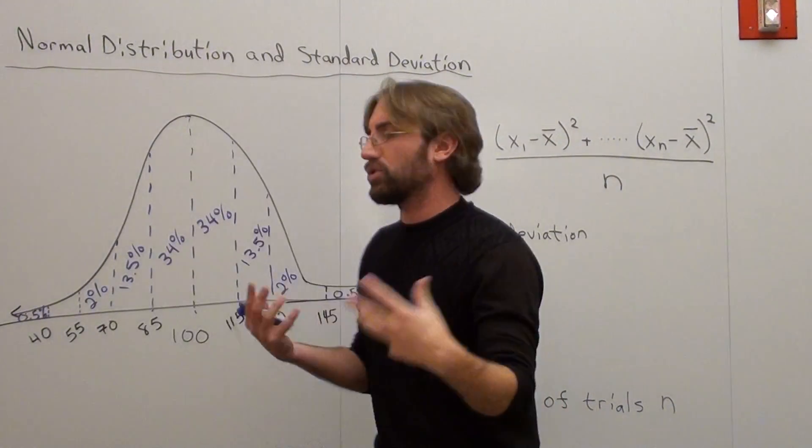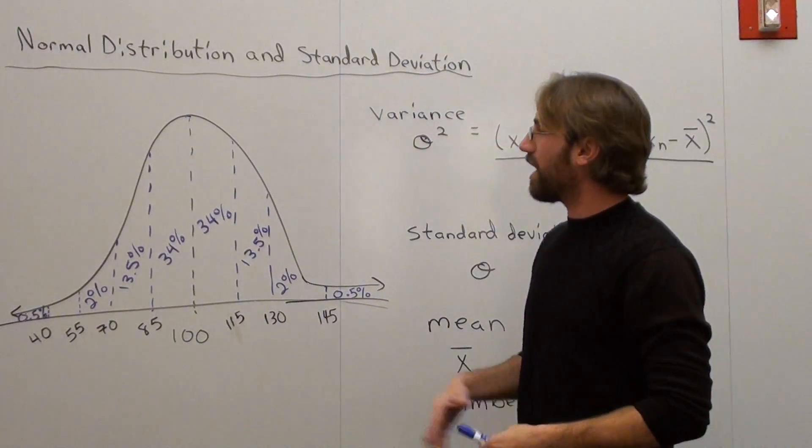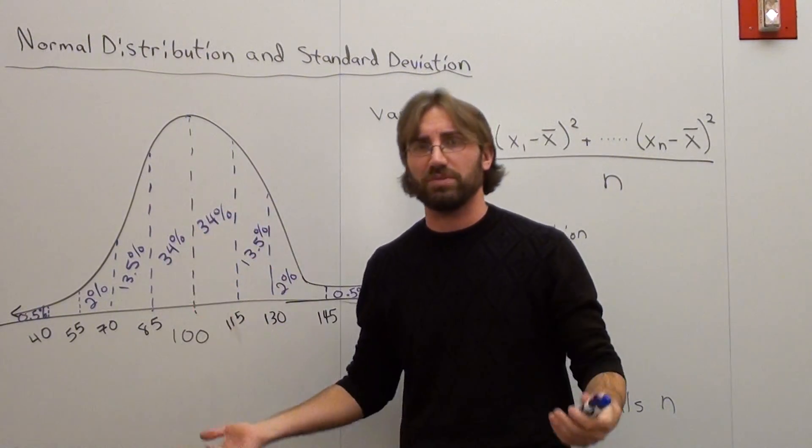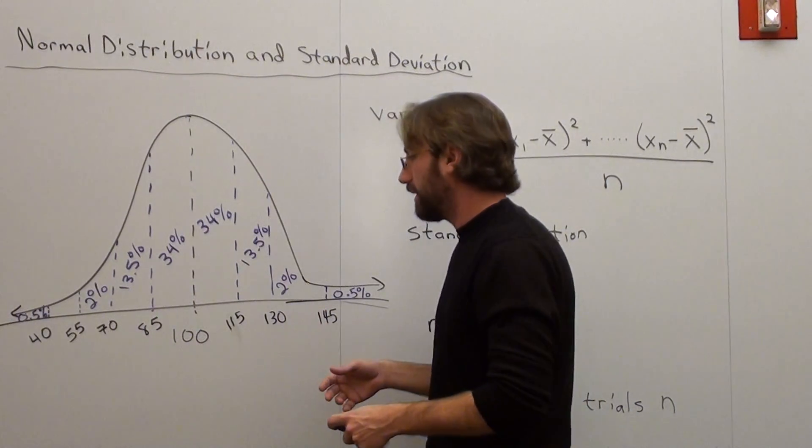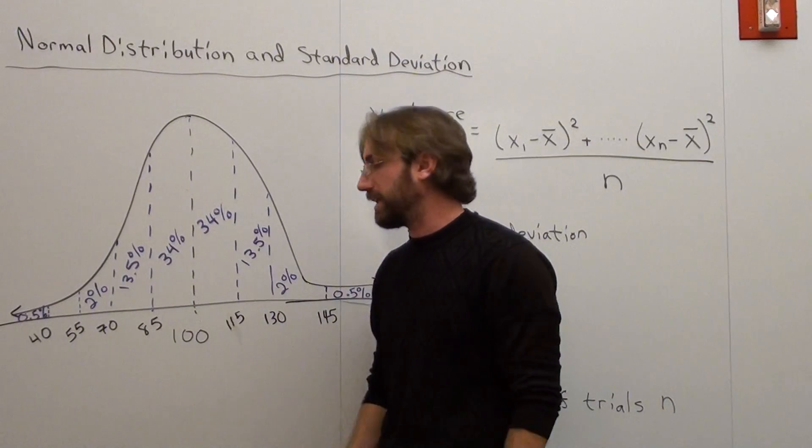People call this a bell curve. It's a normal distribution in this case. And it's actually a normal distribution of something that a lot of people for some bizarre reason take a lot of pride in.